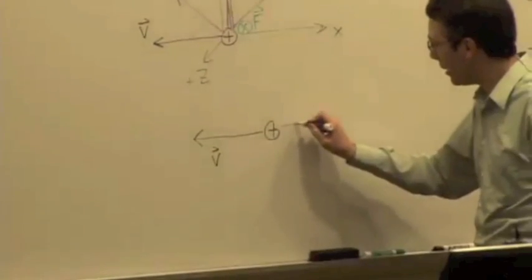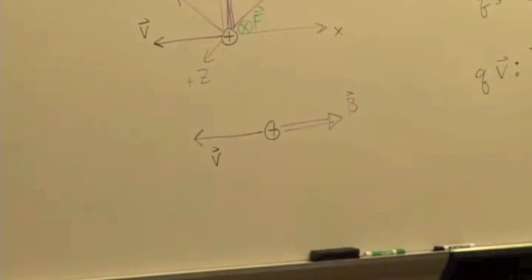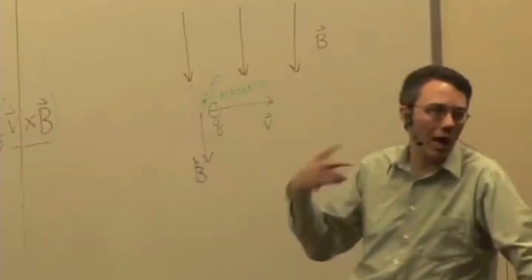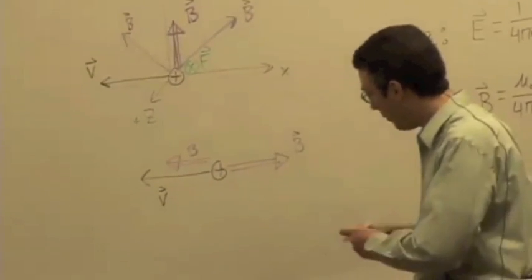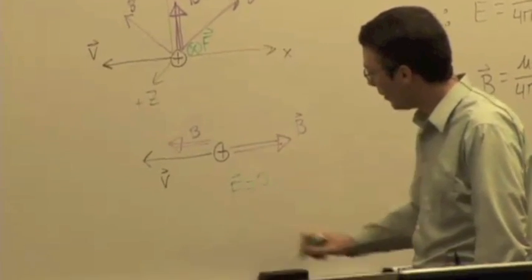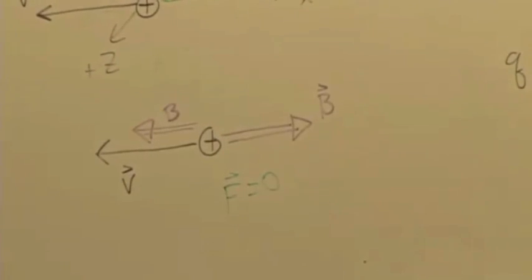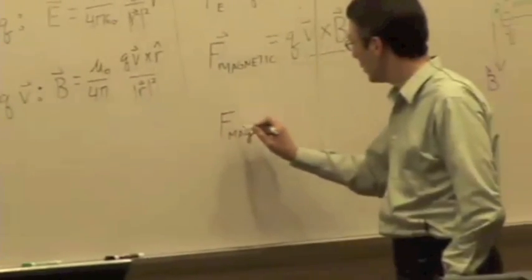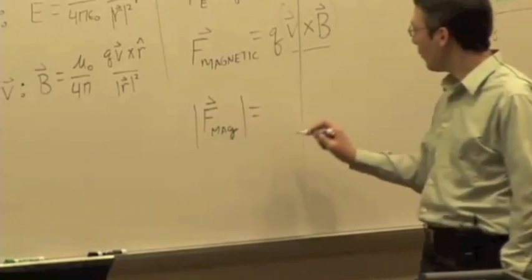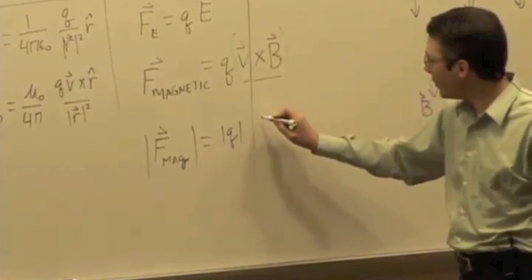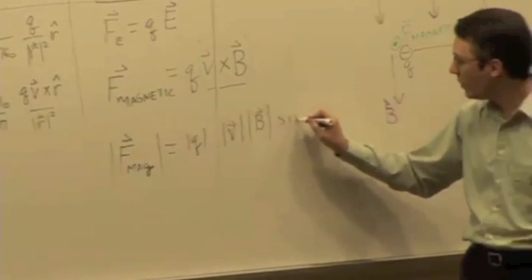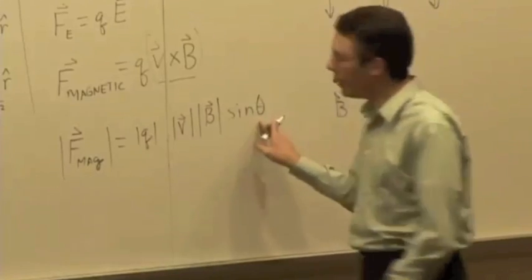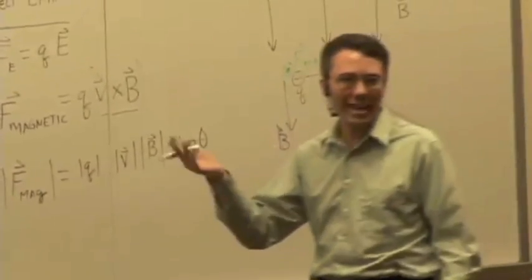What if the proton is moving in the negative X direction and the magnetic field at that location is pointing in the positive X direction? The force is zero, because if you take the cross product of two vectors that are in the same or opposite direction, you get a cross product equal to zero. We can show that by looking at the magnitude: the magnetic force equals the magnitude of the charge times the magnitude of V times the magnitude of B times sine of the angle between those two vectors. If the angle is zero, sine of zero is zero; sine of 180 is also zero.